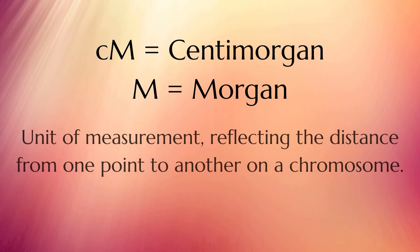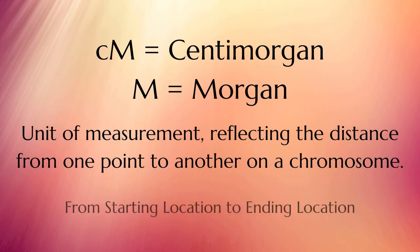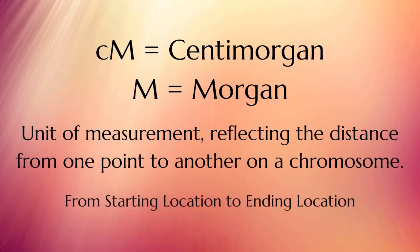Centimorgan, abbreviated as CM — and you'll also get a bonus of Morgan, abbreviated with M. They are a unit of measurement reflecting the distance from one point to another on a chromosome, from starting location to ending location.